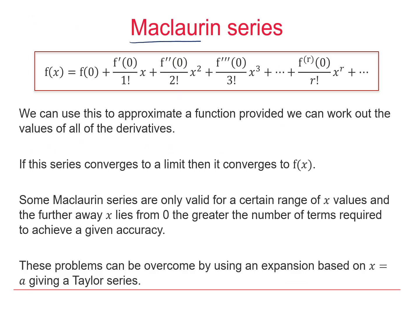The Maclaurin series allows us to approximate the value of f of x, provided we can work out all the derivatives of f and they have a value at zero. If this series converges then the limit it will converge to is the actual value of f of x. So the more terms we end up putting on the more accurate our estimate of f will be.